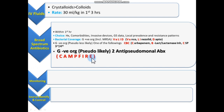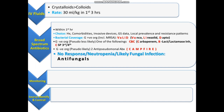That's how we cover all bacteria — gram-positive, gram-negative, whether Pseudomonas is likely or unlikely. At the end, if there is no response to these antibiotics, or if there is neutropenia, or if there are more likely chances of a fungal infection, then we can try antifungals to control the infection.